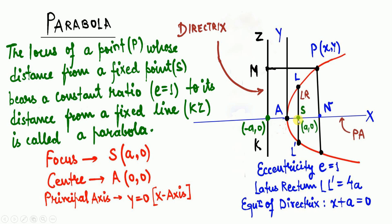This point S is called the focus. This point A is called the center or vertex. This vertical line ZK is called the directrix. The blue horizontal line is called the principal axis. This black vertical line LL' is called the latus rectum.